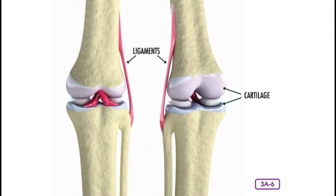Cartilage is found at the ends of bones where they connect with joints as well. This smooth, elastic tissue serves an important purpose. Rub your palms together — do you feel the heat? If bones and joints rubbed back and forth together like this with nothing in between, your bones would soon wear out. Instead, a smooth, slippery coating of cartilage covers bones where they meet joints, protecting them and helping them to last longer.